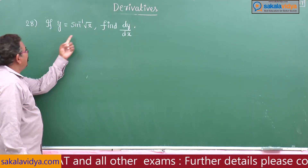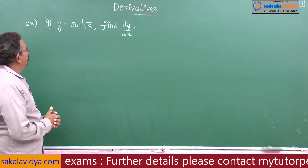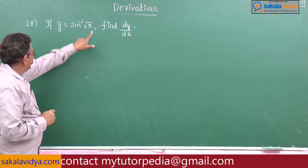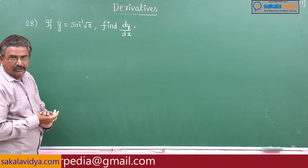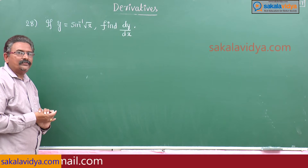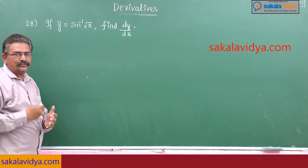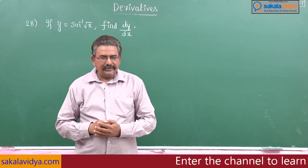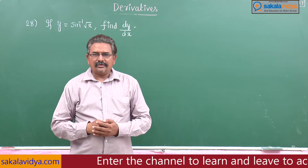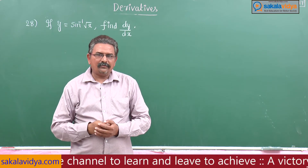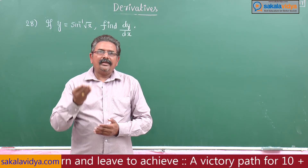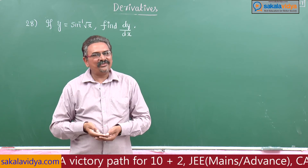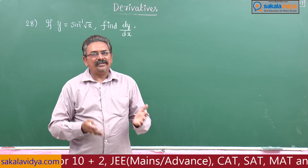If y is equal to sin inverse of root x, find dy by dx. Observe the problem: if you replace root x by u, that becomes sin inverse u. The derivative of sin inverse u is 1 by root of (1 minus u square) into du by dx. So this is 1 by root of (1 minus x) into d by dx of root x, and the derivative of root x is 1 by 2 root x.